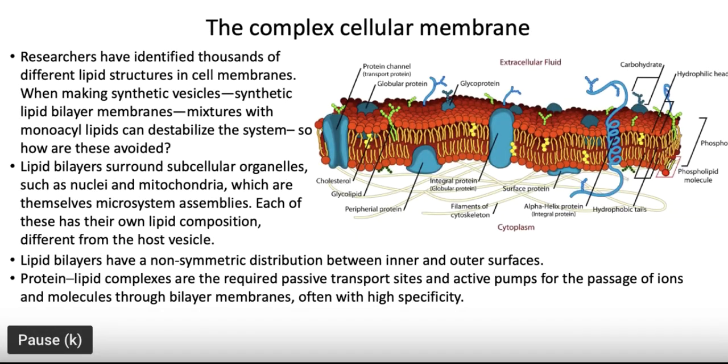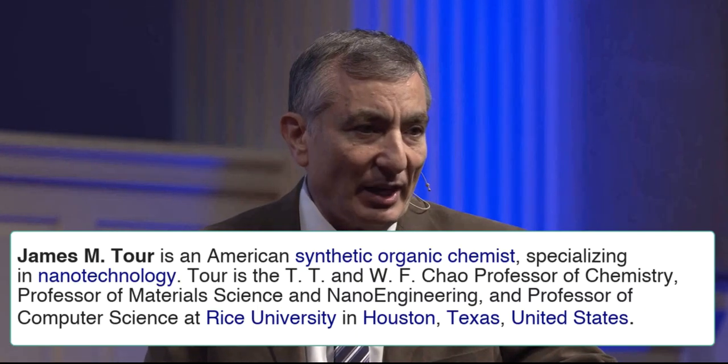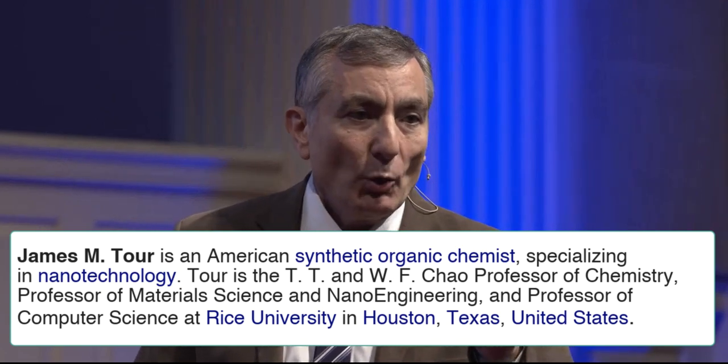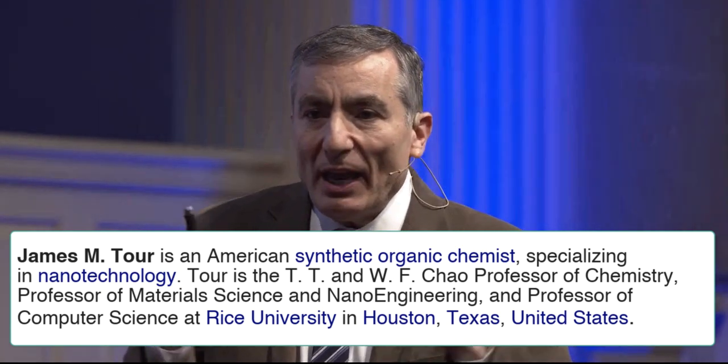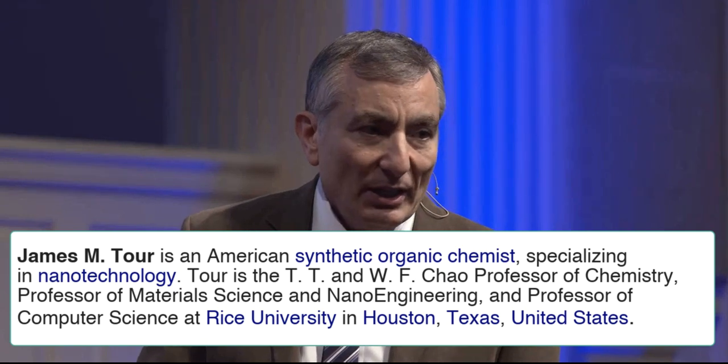These membranes have proteins — a non-symmetric distribution — and proteins that go through them. These are ionophores that allow certain things into the cell and certain things out. Without that, you can't let anything into the cell; it's going to kill the cell. It has very discrete sensors that allow certain molecules in and certain other molecules out, and ionophores that allow certain ions in and out to keep the ionic concentration at a certain level for maintenance of that cell.